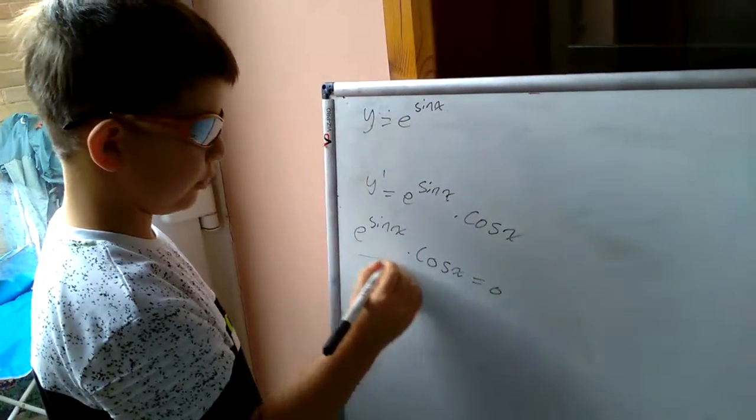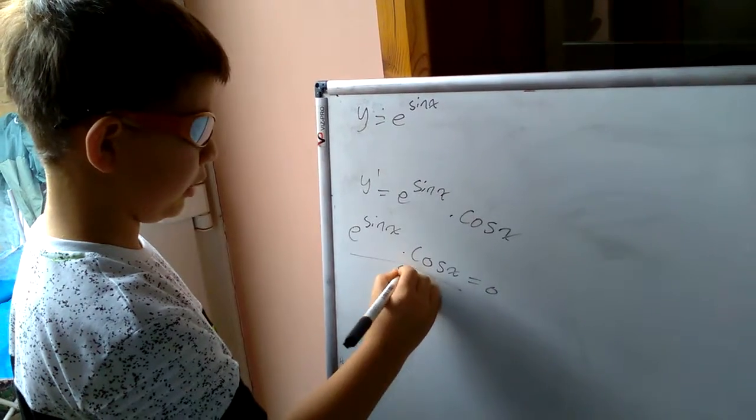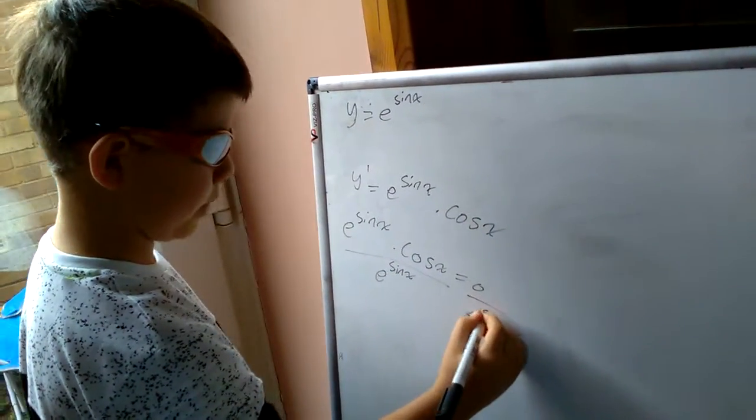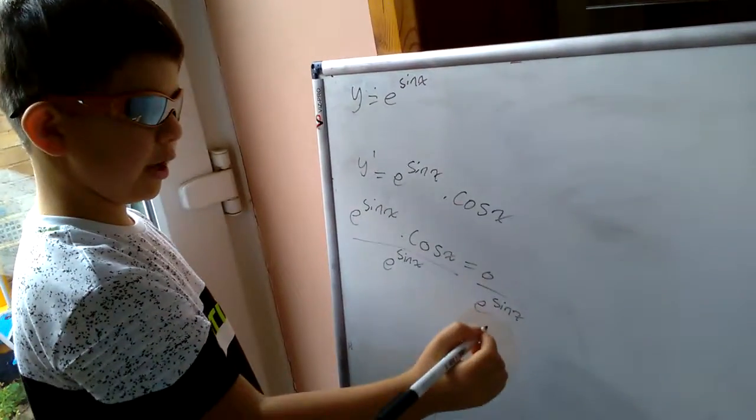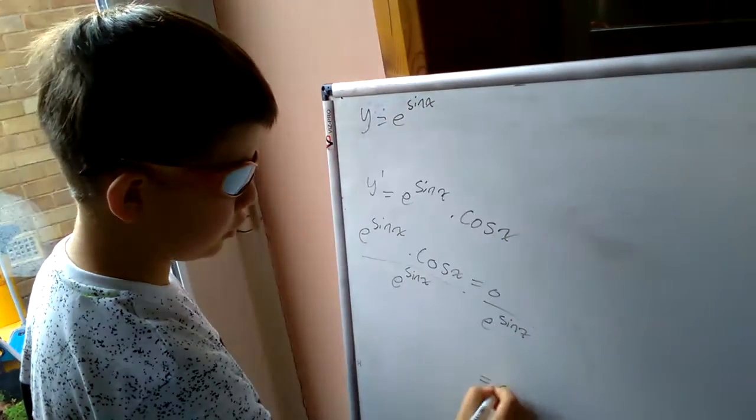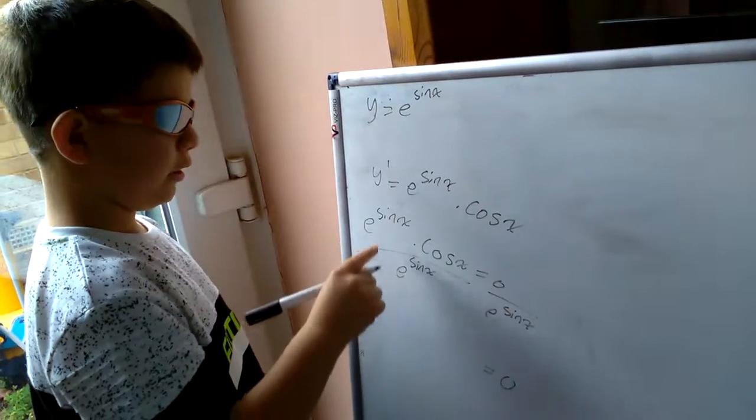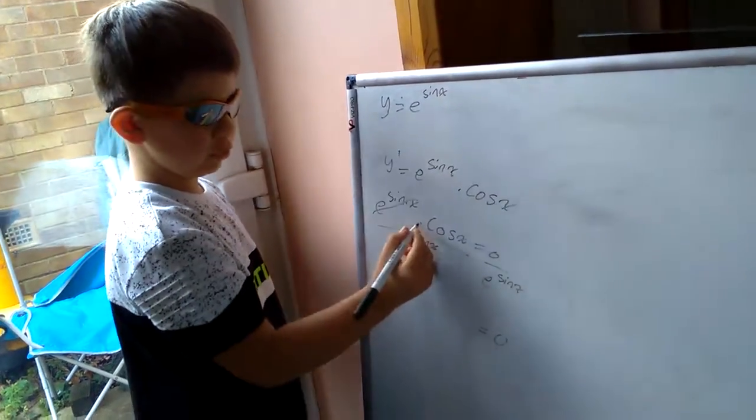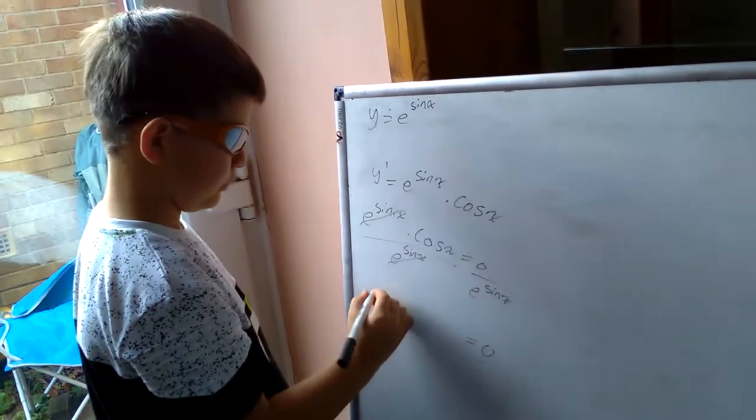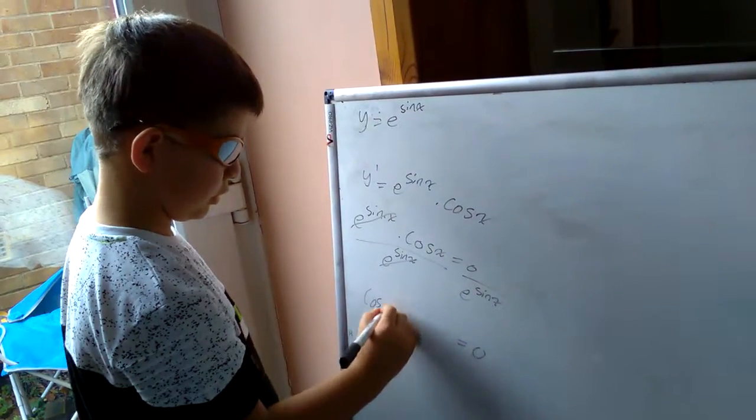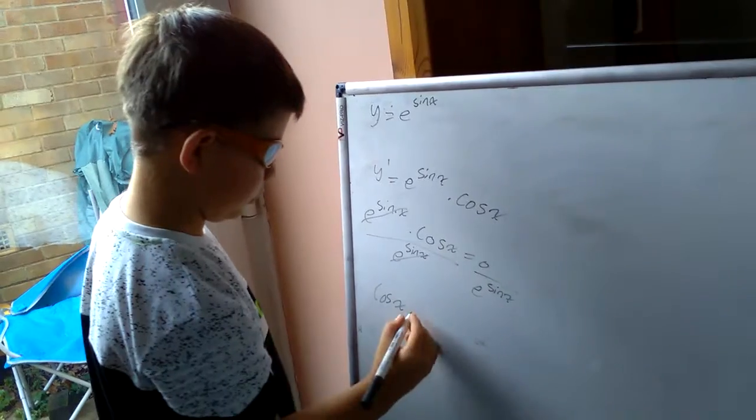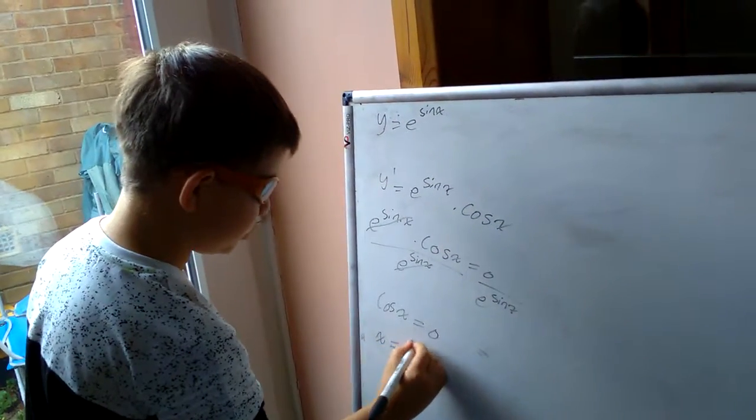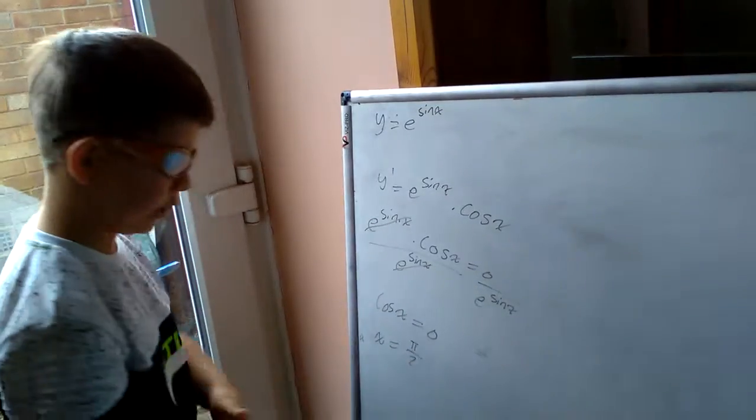Now we can divide both sides by e to the power of sin x. Zero divided by any number always equals zero. e to the power of sin x and e to the power of sin x can cancel as it is multiplication here. So cosine x equals zero, which means x equals pi over two radians.